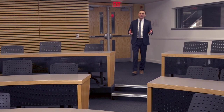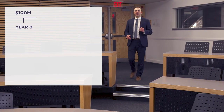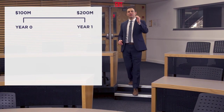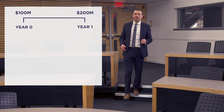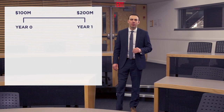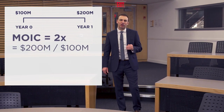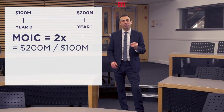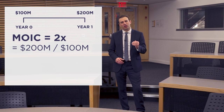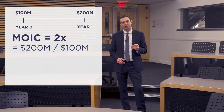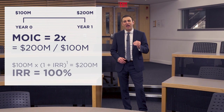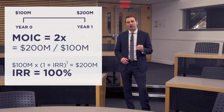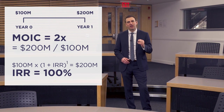So let's say an investor invests $100 million in a private equity fund and receives $200 million back in one year. That investor will have doubled their money, or received a two times multiple on invested capital and 100% internal rate of return, or IRR.